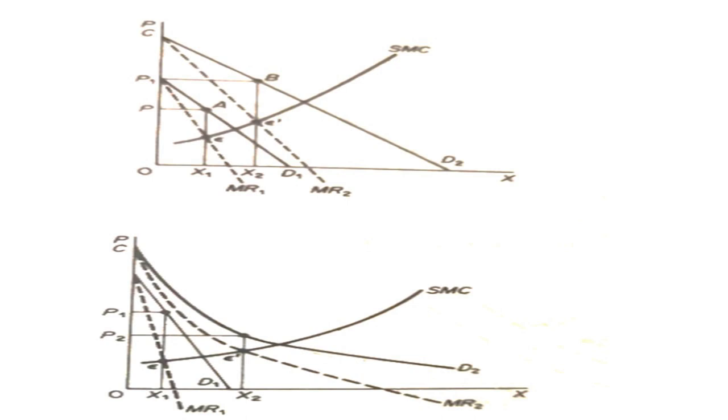Let us see in the graph. If the demand shifts to D2 above D1, the new equilibrium is E', at which both the price and the quantity supplied by the monopolist are greater than at the original equilibrium. That is, E' clearly shows that P2 is greater than P1 and OX2 is greater than OX1 in the first figure.